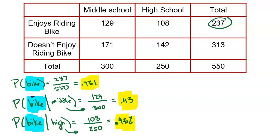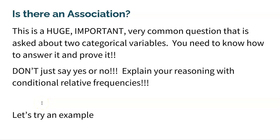We just saw two good examples: there is an association, meaning not independent, versus no association, which is independent. The question of whether there is an association between two categorical variables is a huge, very common question. It's going to be on the AP Stats test — free response, multiple choice — it's a big question. You need to know how to answer it and prove it with numbers, not just a feeling.